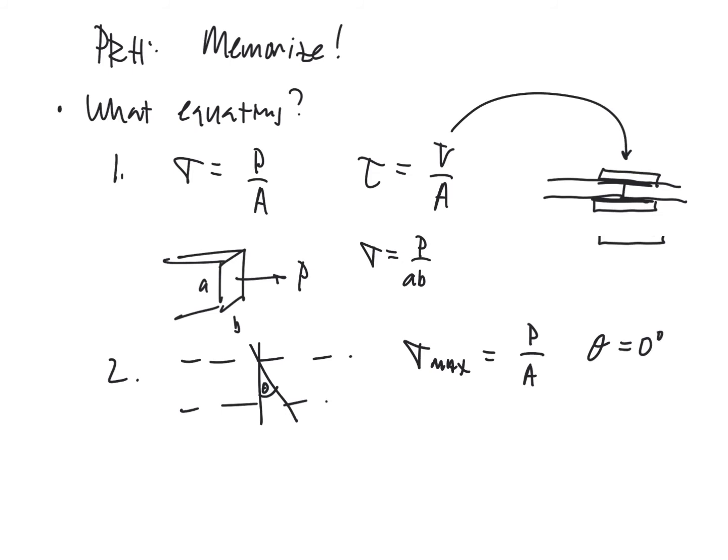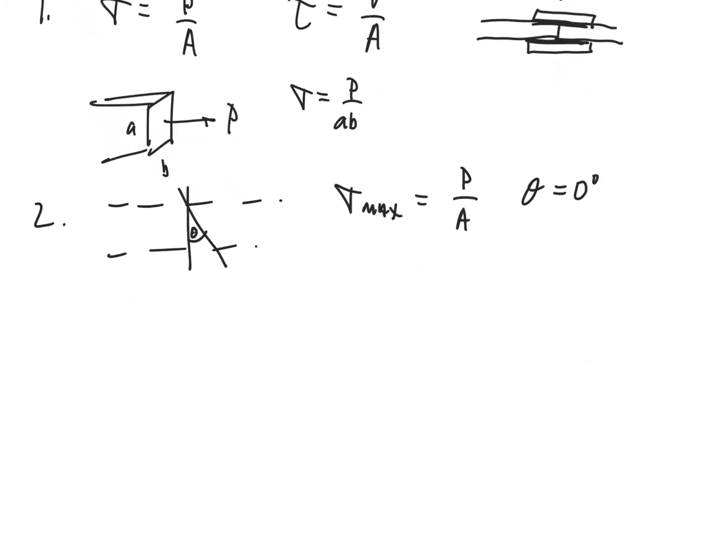That's the maximum possible normal stress that you can get in an axial loaded bar cut at an inclined plane. The tau max is half of that. It's going to be P over 2A, and that occurs when theta is equal to 45 degrees.